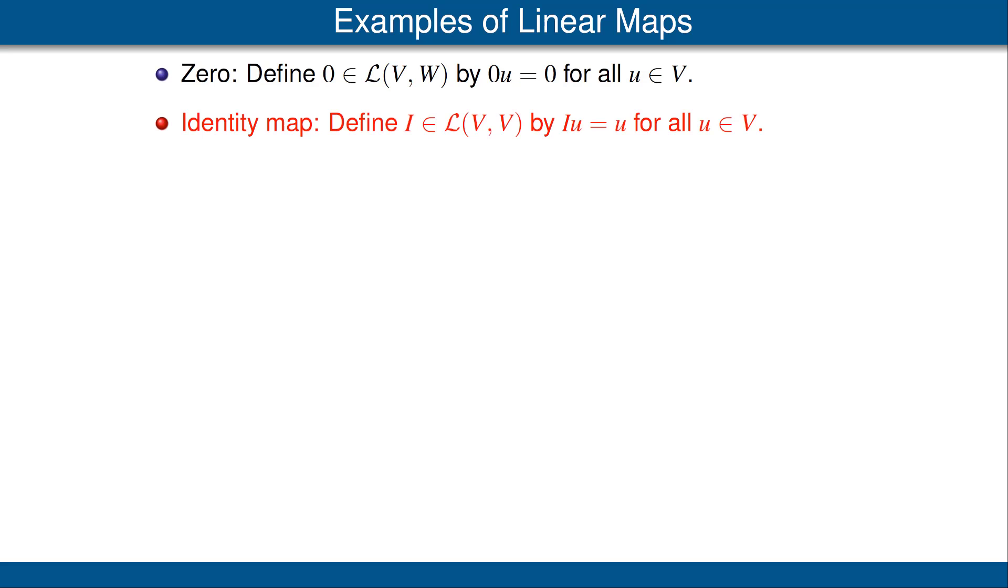Our next example is the identity map from V to V. This linear map takes every vector u in V to itself. Our next example is the differentiation linear map defined on the vector space of all polynomials with real coefficients mapping into the same vector space. We will denote this linear map by D for differentiation. D is defined by D of a polynomial p is equal to the derivative p'.